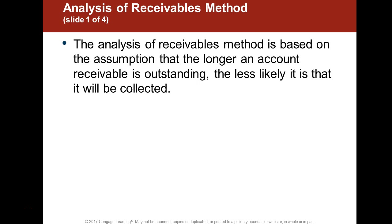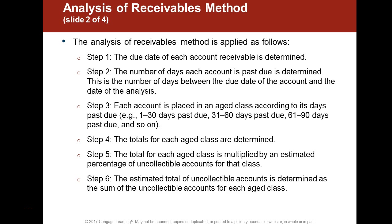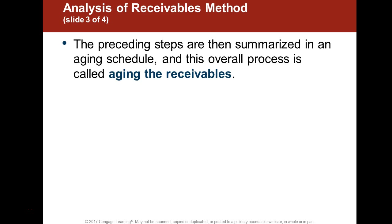Both the income statement method and the balance sheet method are acceptable ways to estimate your allowance — there is no wrong way between the two. With the aging/receivables method, the longer you have to wait to get your money, the less likely you are to get it back. In our example, $100,000 in receivables: $90,000 in the 30-day column, $5,000 in the 60-day column, and the remainder in the 90 to 120 day column.